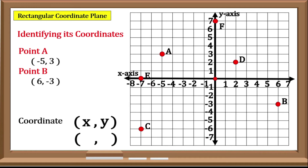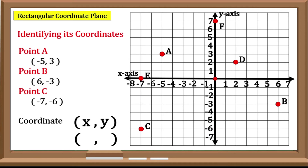Now we have Point C. Create a vertical line along the X-Axis from the given point, which is negative 7, and a horizontal line along the Y-Axis from the given point, which is negative 6. So therefore, the coordinates of Point C are negative 7, negative 6.